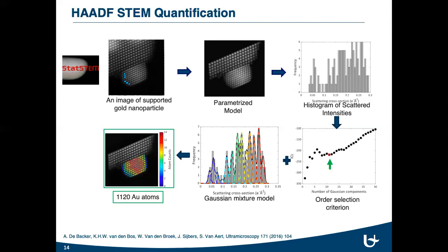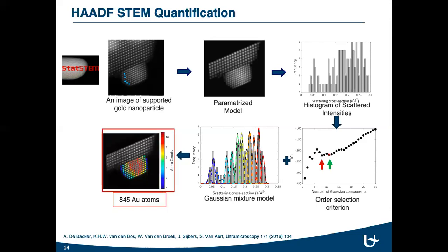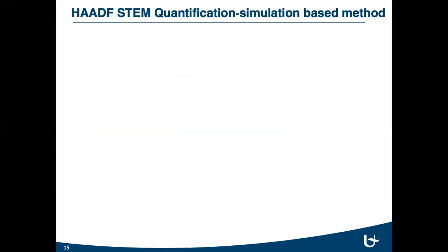However, there is not always one ICL minimum value. And selecting a different ICL minimum directly affects the counting results. Therefore, a validation step is required to select the correct ICL value. For this purpose, simulation-based atom counting method is used.